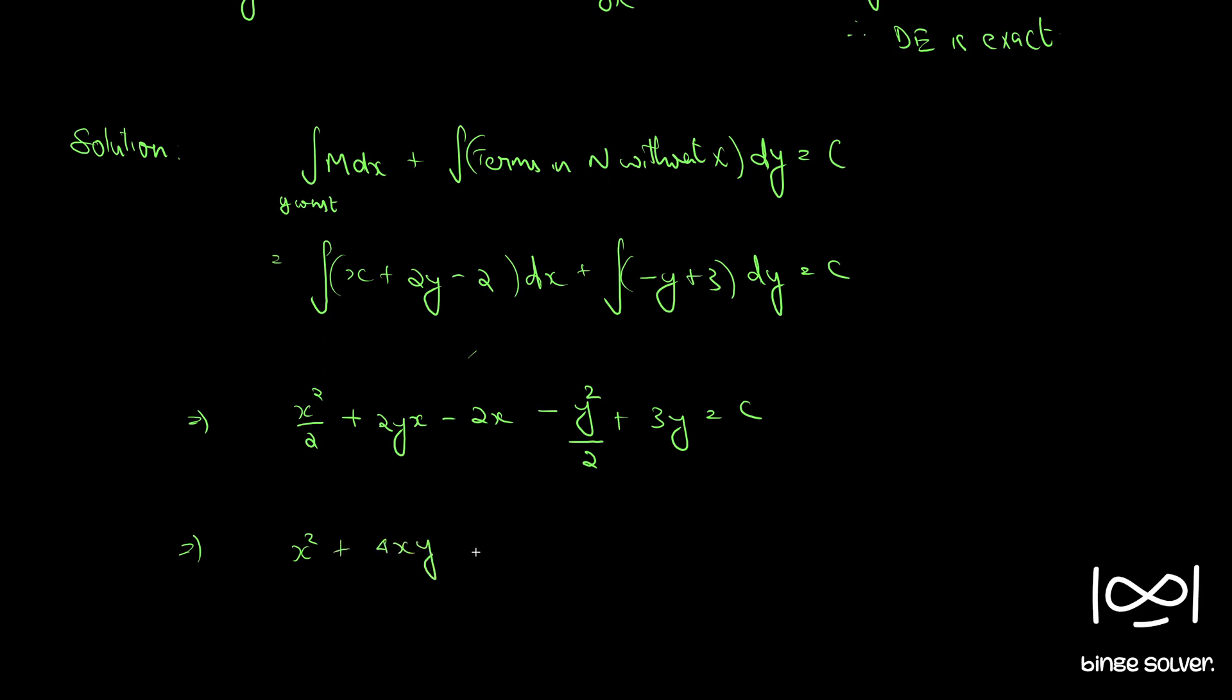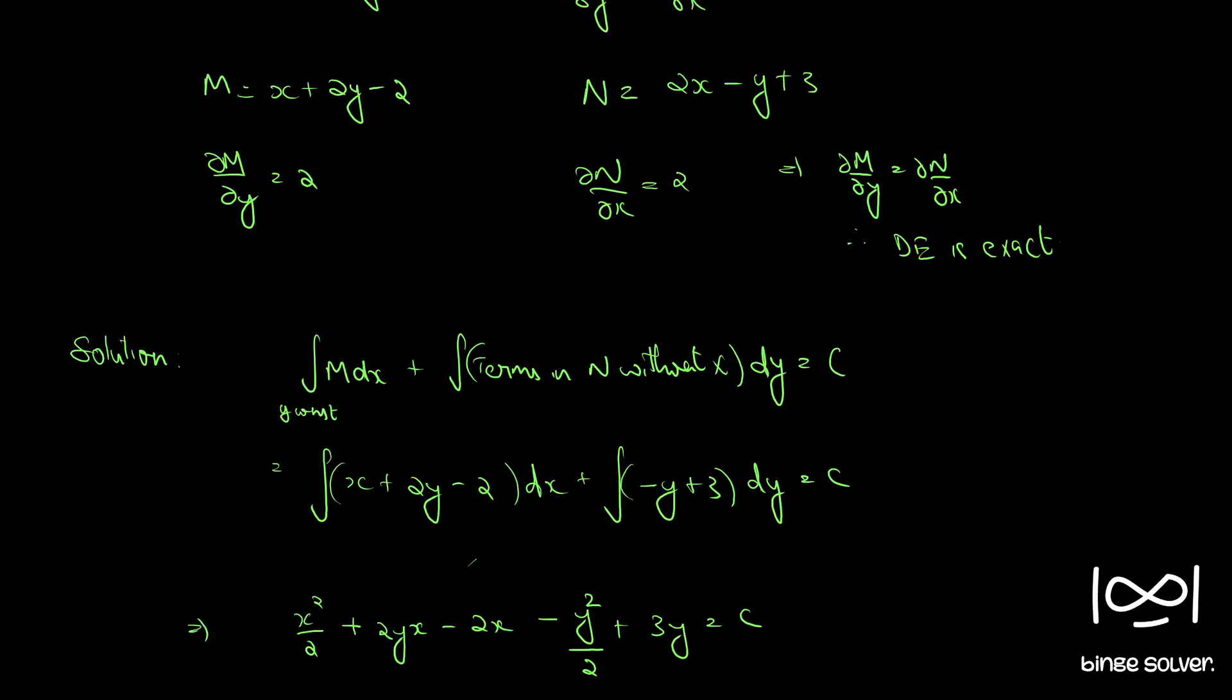minus y square minus 4x plus 6y equal to c. So this is the solution to the question.